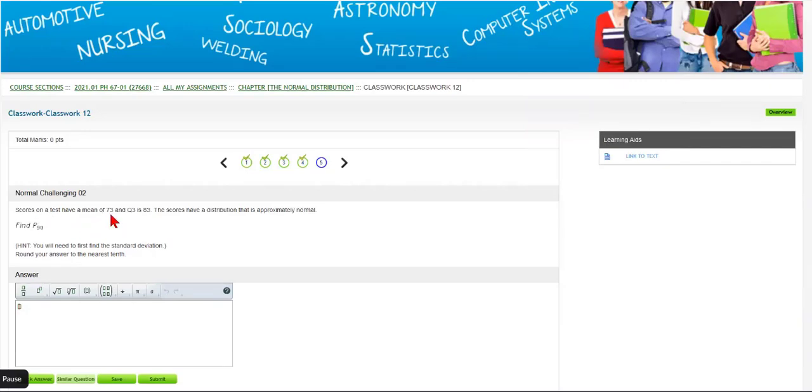Scores on a test have a mean of 73. It says that Q3 is 83. The scores have a distribution that's approximately normal, and find P subscript 90, which is the 90th percentile.